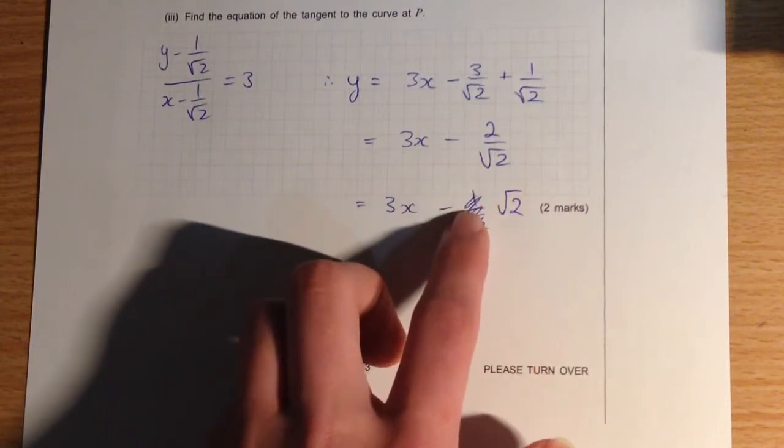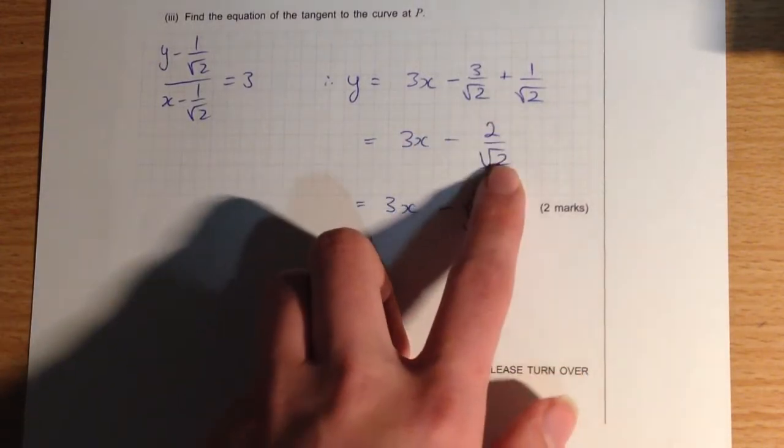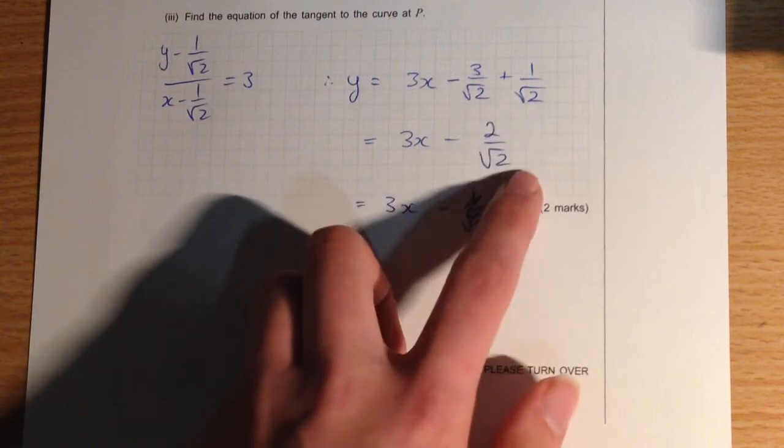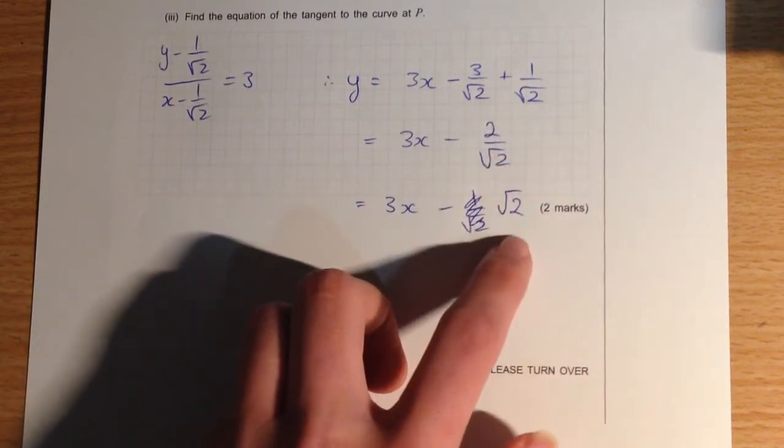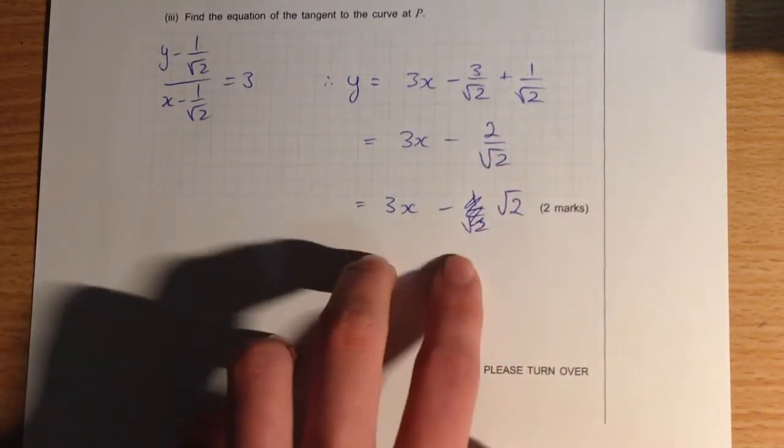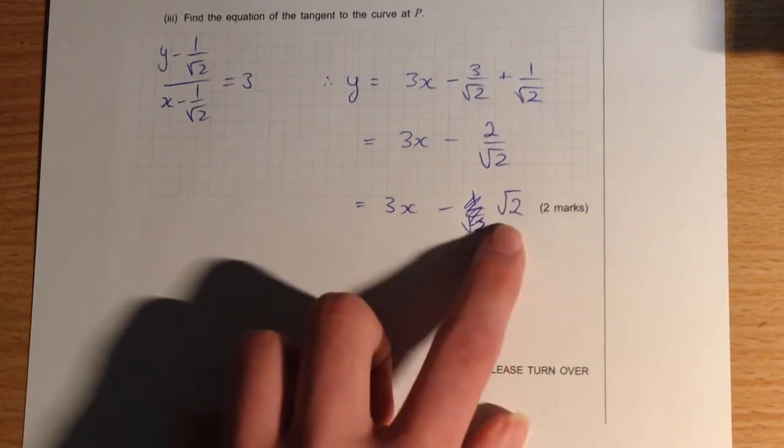And we end up with 3x take 2 on root 2, and that simplifies quite nicely, because we can see if it's 2 on root 2, then we can rewrite the top as square root 2, square root 2, and square root 2's will cancel, and we're just left with square root 2. So we can write the equation of the tangent as being 3x take square root 2.